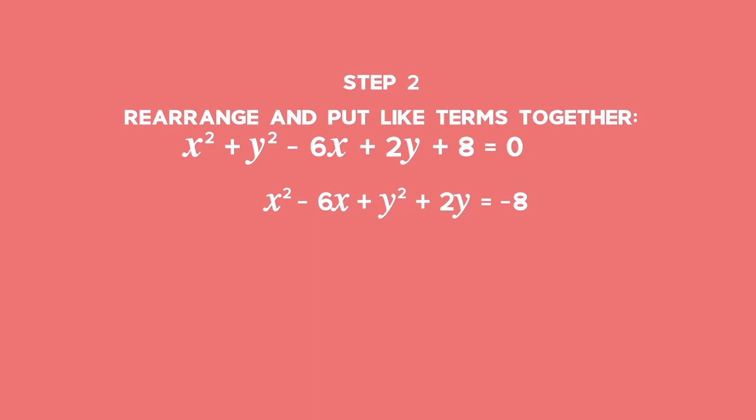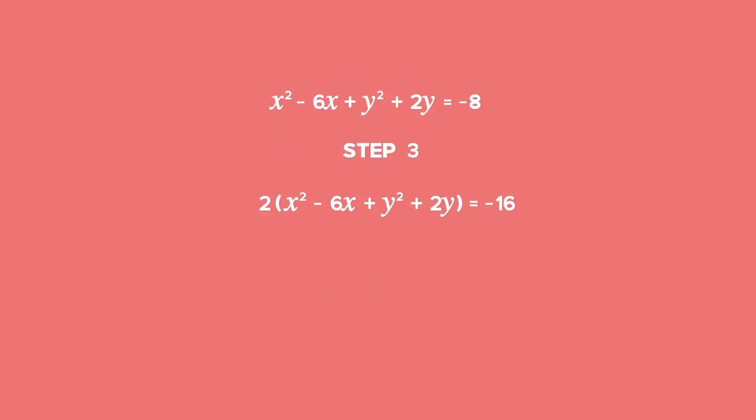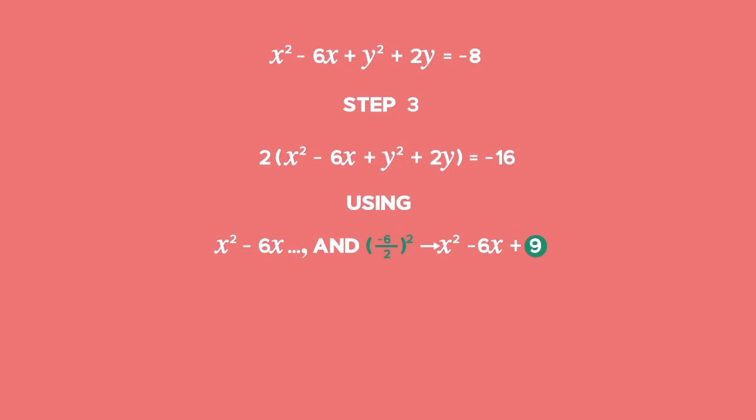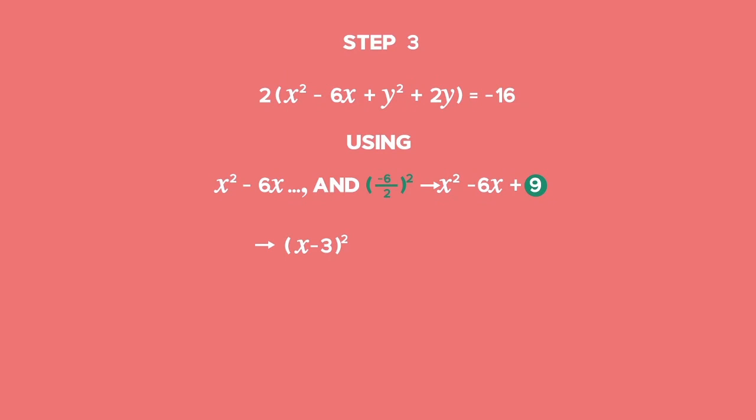Put the constant term on the right of the equation. You should recognise that we can complete a square on x squared minus 6x and complete a square on y squared plus 2y. Half of the coefficient of x is negative 3, so add the square of negative 3, which is 9, to the equation. You should recognise this trinomial as one that can be factorised as x minus 3 all squared.